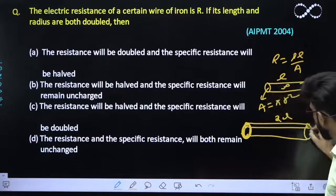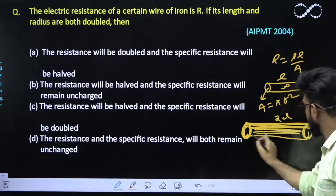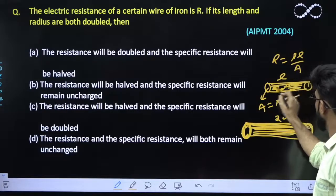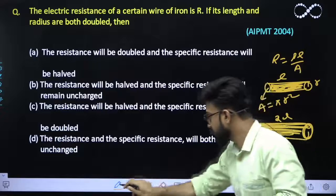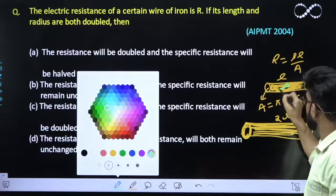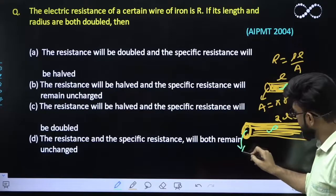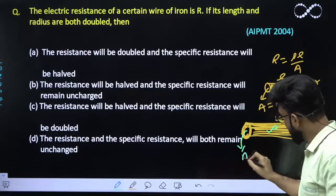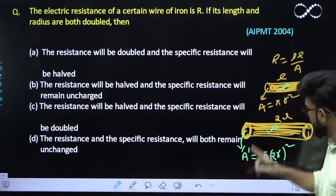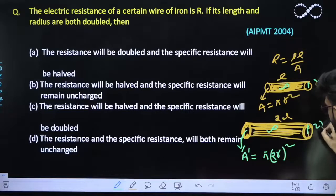So let the area of this whole wire, its resistivity be Rho. Let its area be A' which is nothing but Pi 2R whole square. Because here its radius was R, so here its radius would become twice.